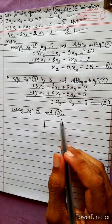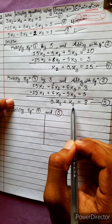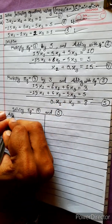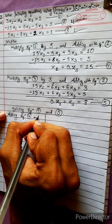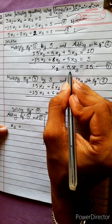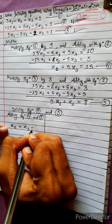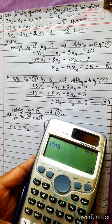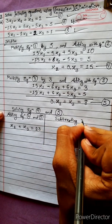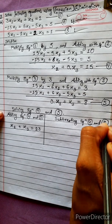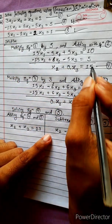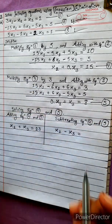Now we have to solve equation 4 and 5. Equation 4 has x2 and 0·x3; equation 5 has 0·x2 and x3. We can solve by two ways. Adding equations 4 and 5: x2 plus x3 equals 15 plus 8 equals 23. Subtracting equation 5 from 4: x2 minus x3 equals 15 minus 8 equals 7.